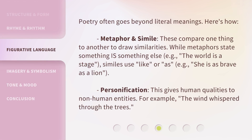Poetry often goes beyond literal meanings. Metaphor and simile: these compare one thing to another to draw similarities. A metaphor states something is something else — e.g., "The world is a stage." Similes use "like" or "as" — e.g., "She is as brave as a lion."